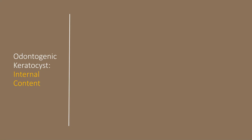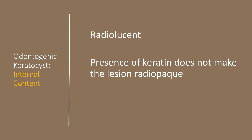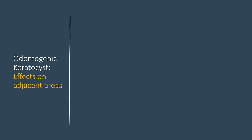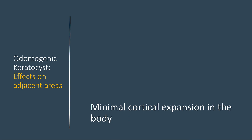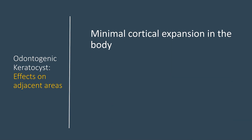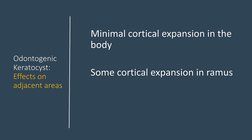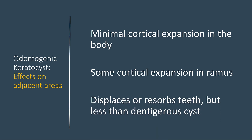The internal content of this lesion is always radiolucent. The presence of keratin does not make this lesion radiopaque. Occasionally, you can see septa inside this lesion, which may give the appearance of an ameloblastoma. Regarding effects on adjacent structures, there is minimal cortical expansion in the body, though there may be some expansion in the ramus. It can displace or resorb a tooth, but this is less common than with a dentigerous cyst. In our case, we saw mild displacement of the molar while there was not much expansion of the cortical plate.